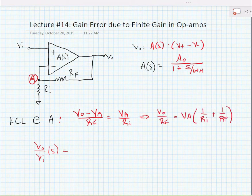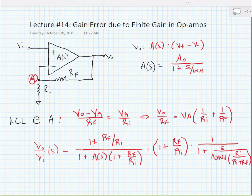Vo minus VA divided by RF is equal to the current going through RI, in other words VA divided by RI. We can further simplify this. Now we're going to substitute our value in for Vo and we will have the output versus input as a function of frequency, Vo over Vi as a function of s.